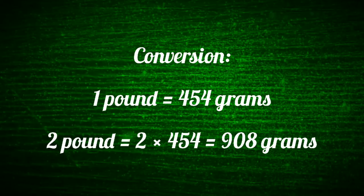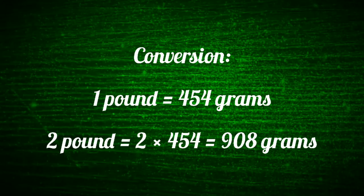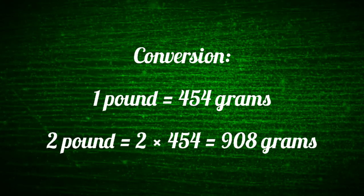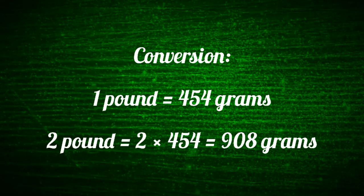Mathematically, one pound is equivalent to 454 grams. Hence, in order to convert pound to grams, we will be multiplying the pound value with 454. For example, if you want to know how many grams is equivalent to two pounds,